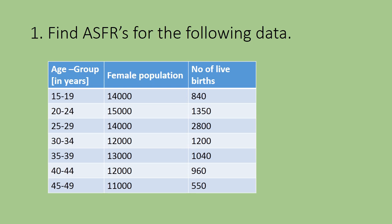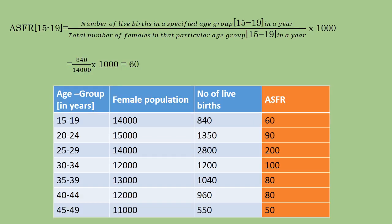Next, a problem: find age-specific fertility rates for the following data. The data shows age groups in five-year intervals starting from 15 to 19, 20 to 24, and so on, along with the female population and the number of live births for each group. Applying the formula for the age group 15 to 19 years: the number of live births is 840, and the female population is 14,000.